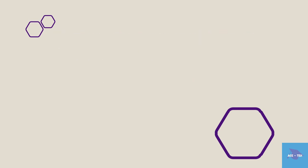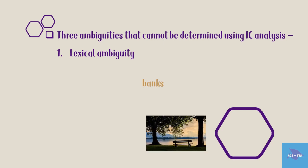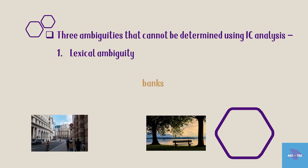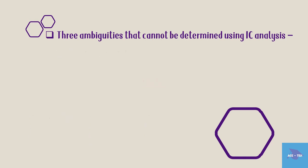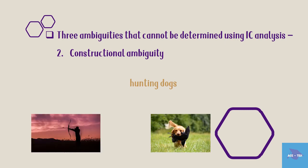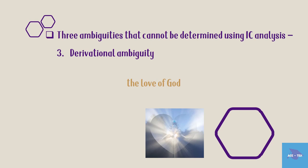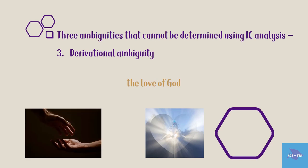There are three types of ambiguity that cannot be determined using IC analysis. First is lexical ambiguity — for example, the word 'banks' can mean either the side of a river or an organization that provides financial services; IC analysis fails to show this difference. The second is constructional ambiguity — the phrase 'hunting dogs' can mean either dogs used for hunting, or the act of hunting dogs. Third is derivational ambiguity — consider the phrase 'the love of God': does it refer to God's love for us, or our love for God? IC analysis cannot determine this.